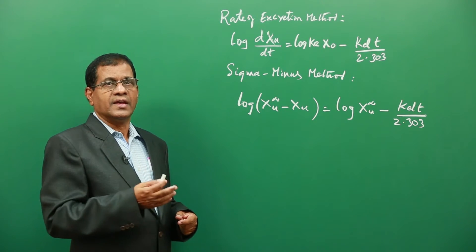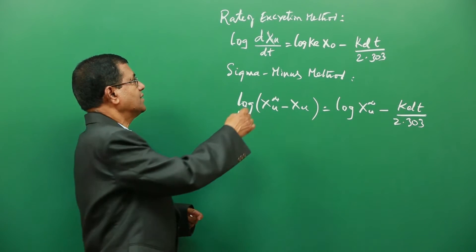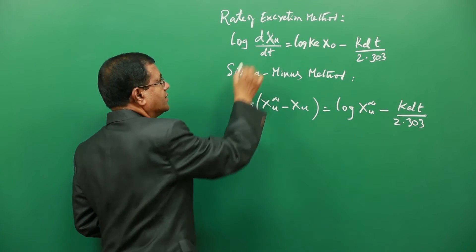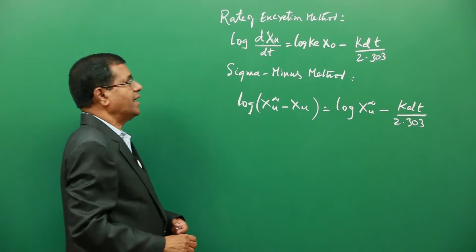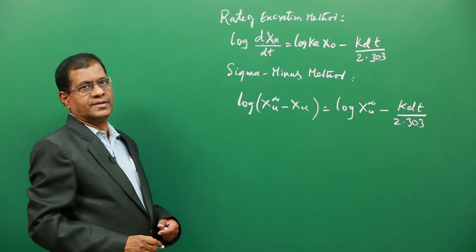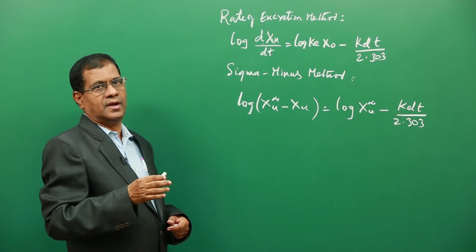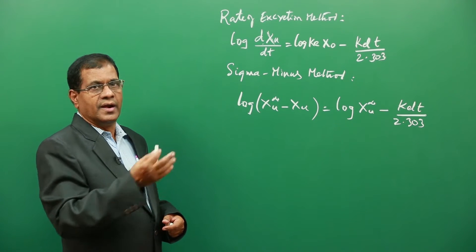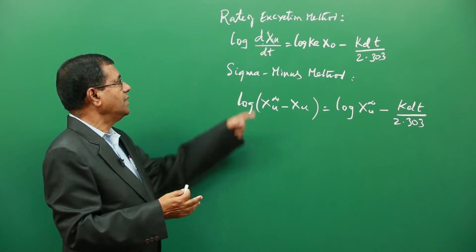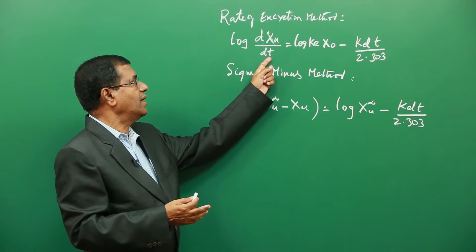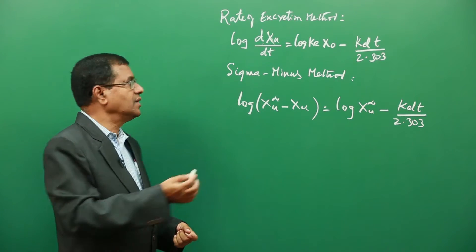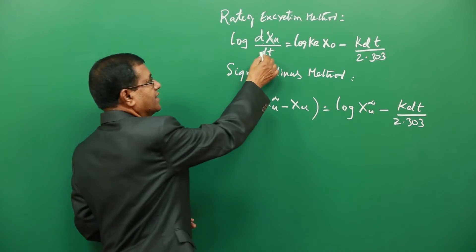As per this equation, the variable here is dxu/dt, where xu is the amount excreted in the urine, divided by delta t — the time difference — giving the rate of excretion.